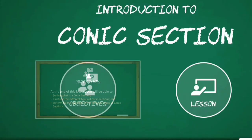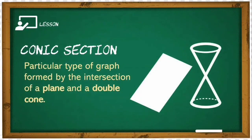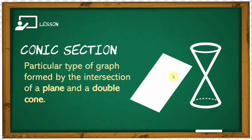So, if you're ready, let's get started. We define a conic section, or conics, as a particular type of graph formed by the intersection of a plane and a double cone.